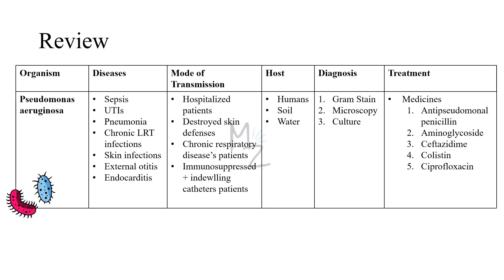Quick recap: Pseudomonas aeruginosa is responsible for causing sepsis, urinary tract infections, pneumonia (especially nosocomial pneumonia), chronic respiratory tract infections, skin infections, external otitis, and endocarditis. It is transmitted to hospitalized patients, those with destroyed skin defenses, chronic respiratory disease patients, immunosuppressed patients, and patients with indwelling catheters. Hosts include humans, soil, and water. Diagnosis is based on gram staining, microscopy, and culture. Treatment involves anti-pseudomonas penicillin, aminoglycoside, ceftazidime, colistin, and ciprofloxacin.